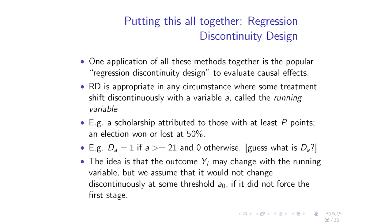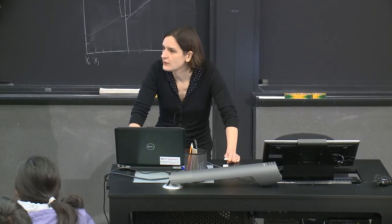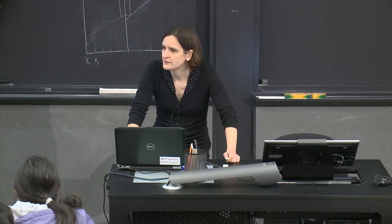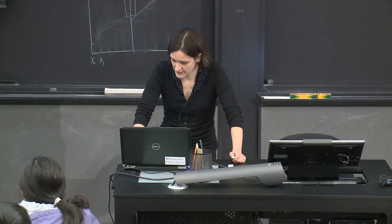Drinking age — exactly. This is relevant to many of you, so pay close attention. D_a is 1 above 21 and 0 otherwise. The idea is we look at an outcome related to drinking age. They look at motor vehicle fatalities. As people become older, they probably become more reasonable and better drivers, so motor vehicle accidents should generally go down with age.